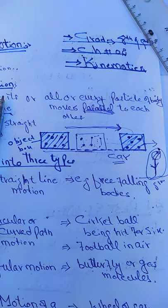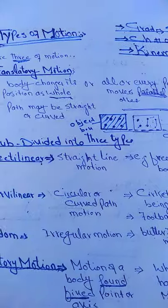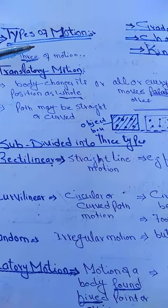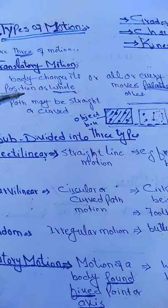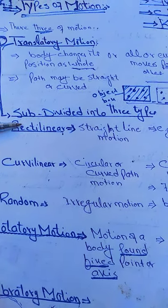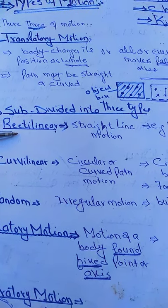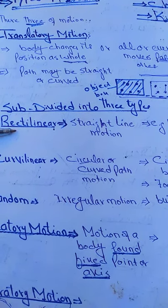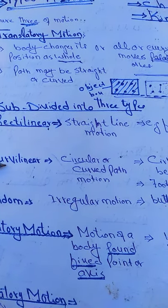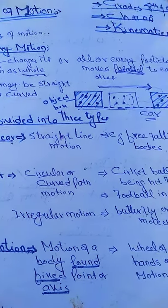This type of motion is called translatory motion. Translatory motion is divided into three sub-types: one is rectilinear motion, one is curvilinear motion, and one is random motion.